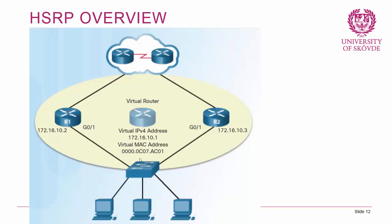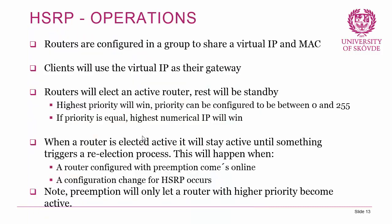With HSRP, you have two or more routers — typically R1 and R2 — configured on the same local area network and set up to act as one virtual router. Clients use the virtual router's IP address as their default gateway. The routers manage on their own who is currently active and forwarding traffic. If the active router goes down, the standby takes over.